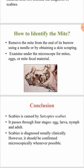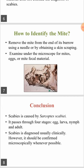How to identify the mite? We use the tip of a needle to remove the mite from its burrow, then we put it on a slide. Or, the other way, we obtain a skin scraping from the lesion, then we put it on a slide and examine the sample under the microscope. We remove the mite from the end of its burrow using a needle or we obtain a skin scraping, then examine this under the microscope looking for mites, eggs, or mite fecal material.